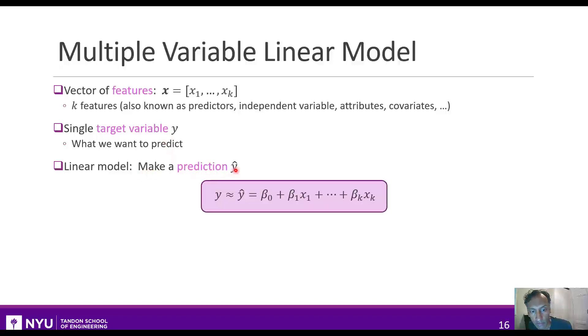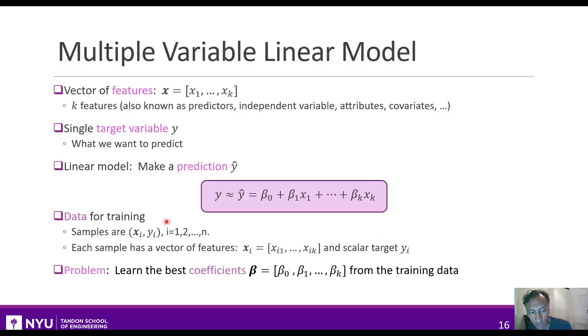A linear model just makes the prediction that y-hat is a linear combination of those features. So there's the intercept term plus the k coefficients. When we want to fit this model, we have training data that is samples of x_i with labels y_i, and we have n of them. Each sample has a vector of values x_i1 to x_ik and a scalar target y_i. From this data, we want to find the coefficients in this model.